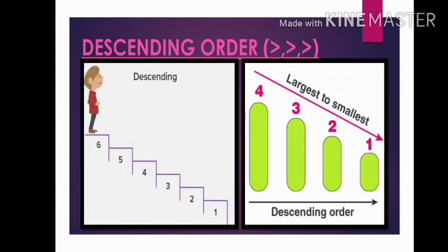Here let us know about descending order. Here person wants to go from top to down which is in decreasing order which also means from largest to the smallest. It is called descending order.